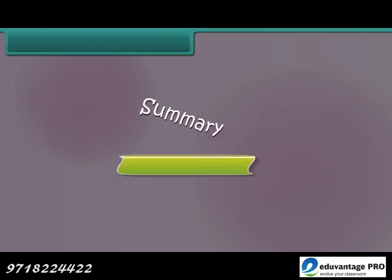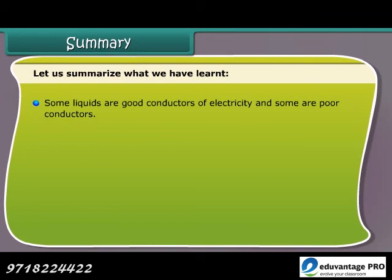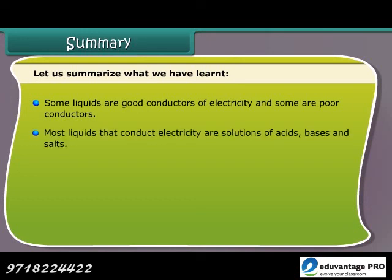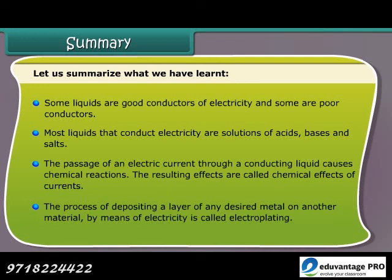Summary: Some liquids are good conductors of electricity and some are poor conductors. Most liquids that conduct electricity are solutions of acids, bases, and salts. The passage of an electric current through a conducting liquid causes chemical reactions; the resulting effects are called chemical effects of current. The process of depositing a layer of any desired metal on another material by means of electricity is called electroplating.